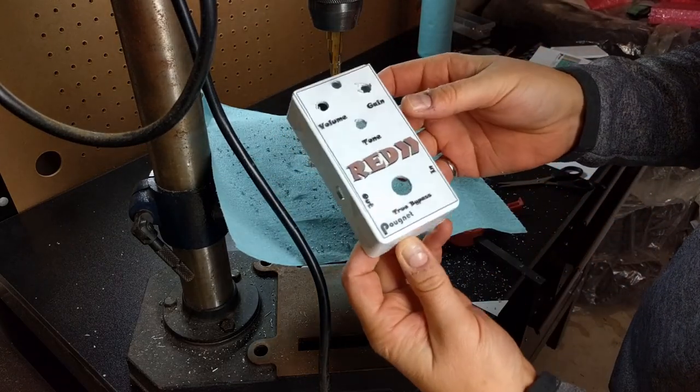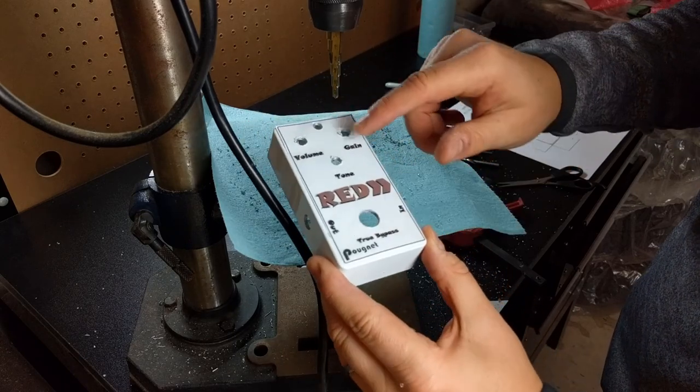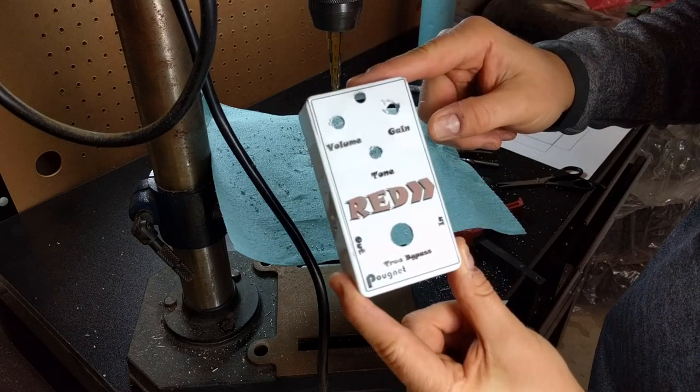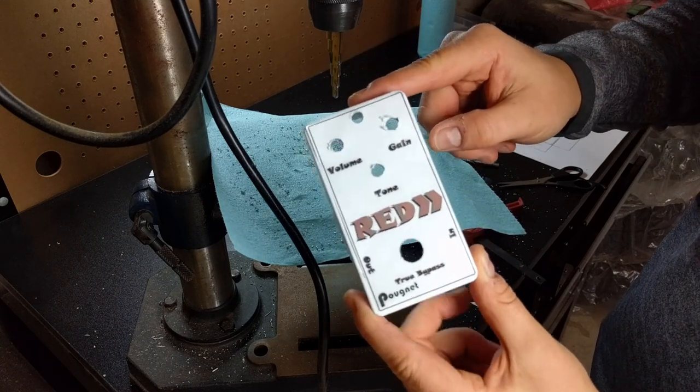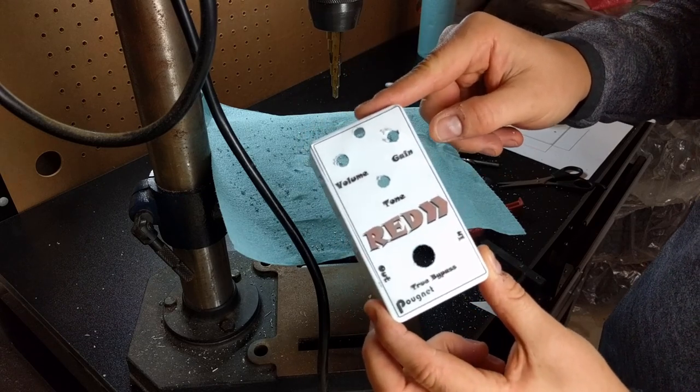And there we have it. So this was an easy one to drill out. A power jack, audio jacks, foot stomp, LED, and potentiometers. So now that we've got this done, I'm going to take it upstairs out of the shop and we'll look at how I put my enclosure graphic on top of it.